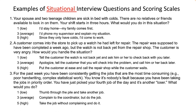Looking at the third question: 'For the past week, you've been consistently getting the most time-consuming jobs — poor handwriting, complex statistical work, etc. You know it's nobody's fault because you've been taking jobs in priority order. You've just picked your fourth job of the day and it's another so-called loser. What would you do?' If the response is 'thumb through the pile and take another job,' the rater gives a 1. If the answer is 'I would complain to the coordinator but do the job,' the score is 3. If the answer is 'I'd take the job without complaining and do it,' the score is 5.